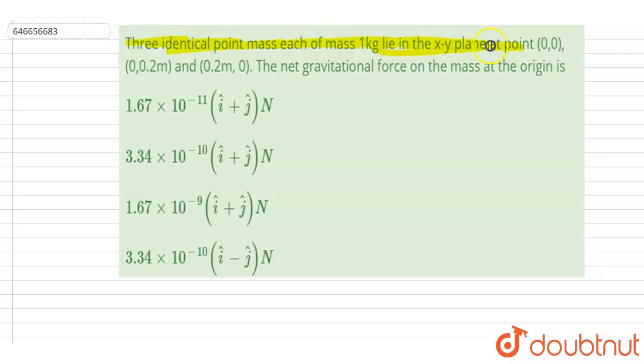Each of mass 1 kg lies in the xy plane at (0,0), (0,0.2), and (0.2,0). Write the net gravitational force on the mass at the origin.